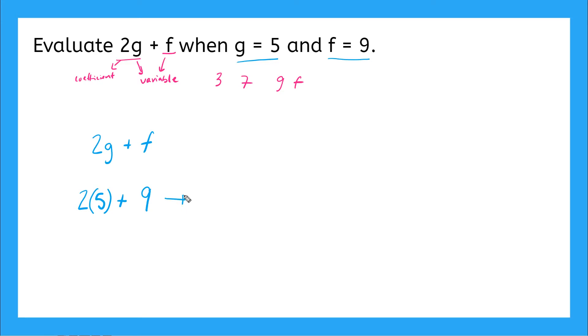Awesome. Now I can start to simplify using order of operations. So the first thing I do is I multiply 2 times 5, that gives me 10 plus my 9. And if I add 10 plus 9, I get 19. Awesome. So that is the answer.